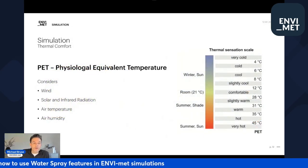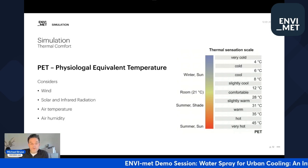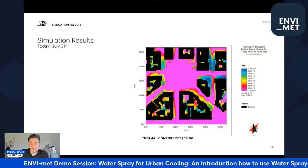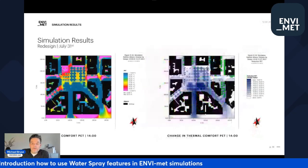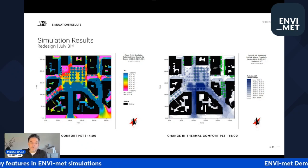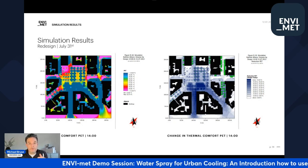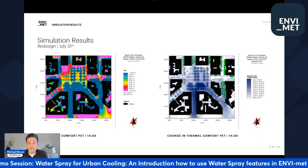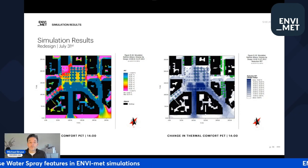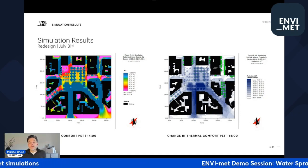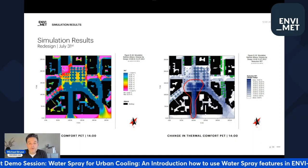For PET — my favorite thermal comfort index, though you're welcome to use UTCI, SAT, or OutStar — you can see the thermal discomfort map for the old Omonia Square and, very nicely, the result of the redesign. The thermal comfort map shows contributions from everything: air temperature, wind movement, shading effects, small trees, water evaporation, and different surfaces. It's a very nice implementation of different methodologies, some nature-based, some not. We'll focus on the water spray and how to use it in your EnviMed simulation.